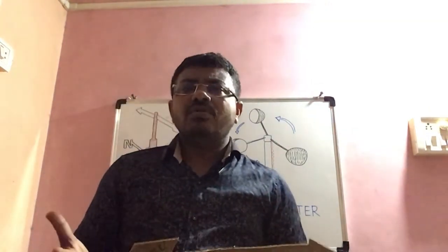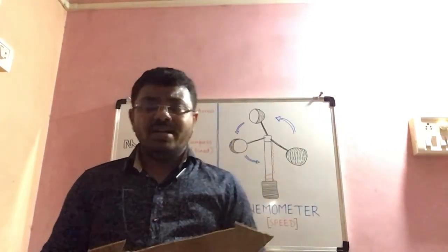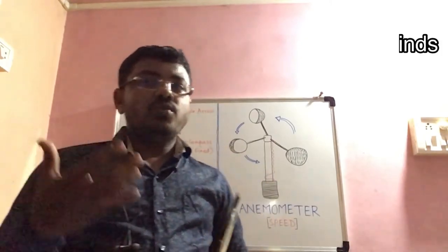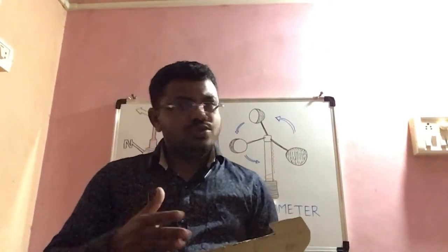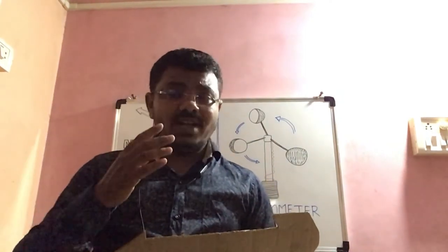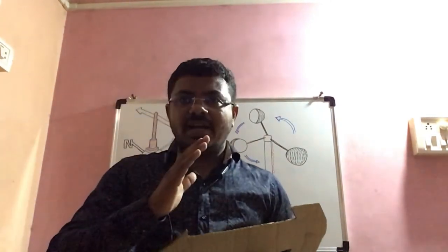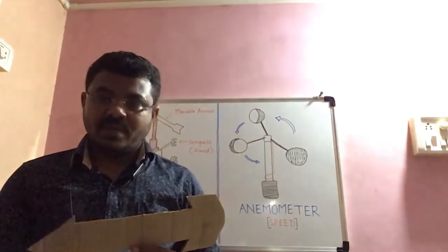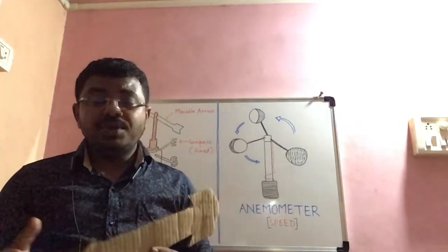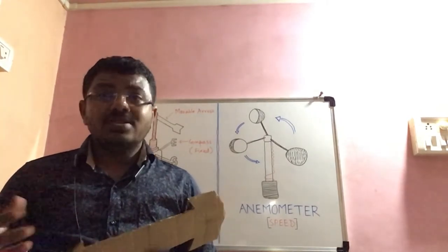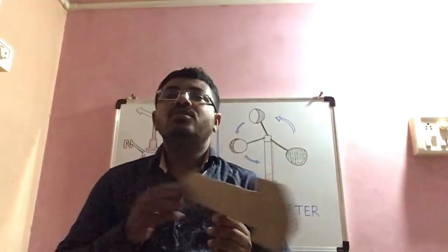Why do we need information about wind direction? The wind direction will tell us from which area the wind is blowing and towards which area. For example, wind can blow from land towards the sea, and also from sea towards the land. If the wind is blowing from sea towards the land, it may bring a lot of moisture and give rainfall. If blowing from land towards the sea, the winds might be dry and may not give rainfall.